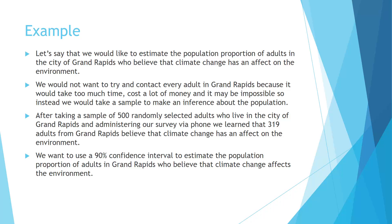So we take a sample of 500 randomly selected adults who live in the city of Grand Rapids and administer a phone survey. From that phone survey, we learn that 319 adults out of the 500 sampled said that they believe that climate change has an effect on the environment. We want to use a 90% confidence interval to estimate the population proportion of adults in Grand Rapids who believe that climate change affects the environment.